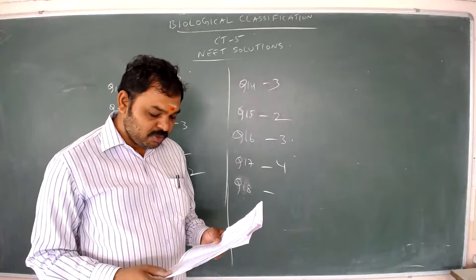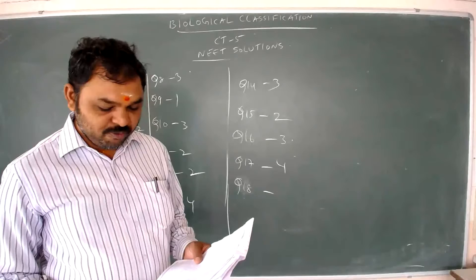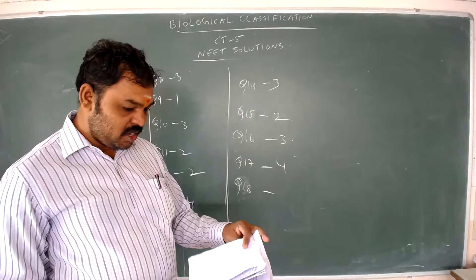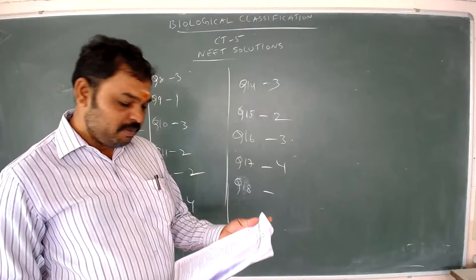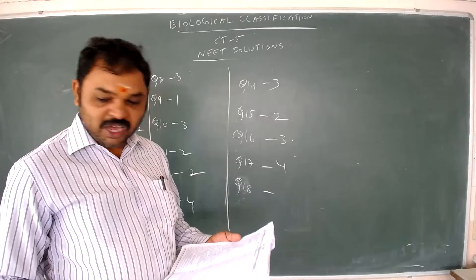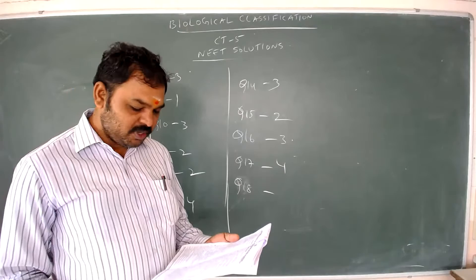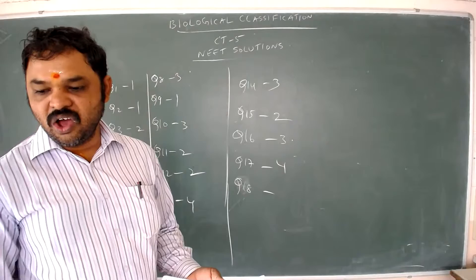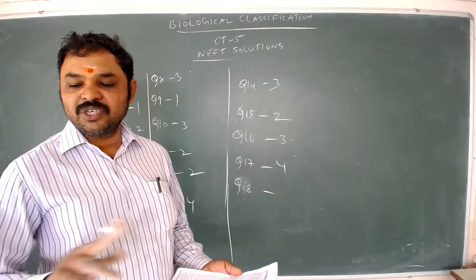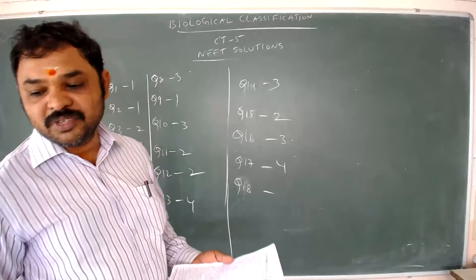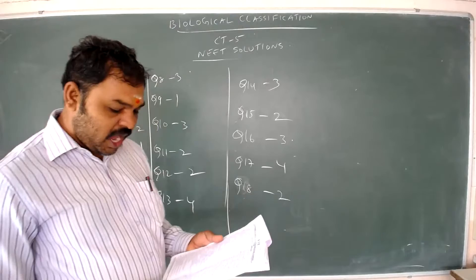Question number eighteen: which pair belongs to Basidiomycetes? Mushrooms and puffballs belong to Basidiomycetes. Morels and Marcella belong to Ascomycetes. Claviceps belongs to Ascomycetes. Peziza belongs to Basidiomycetes. Stinkhorn belongs to Ascomycetes. In all the options, one Basidiomycetes and one Ascomycetes organism was given. The pair where both are Basidiomycetes — mushrooms and puffballs — is option 2. The answer is option 2.